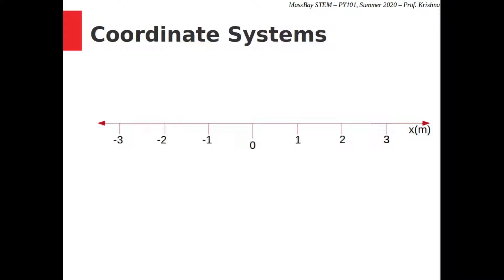A number line does a few things. First, it gives every point on the line a distance from the origin: one meter, two meters, three meters, and so forth. Second, with respect to the origin there are two directions, left and right, represented in the numbers too. Everything left of the origin is negative, while everything right is positive. So we can use negative and positive numbers as symbolic representations of the left and right directions, respectively.